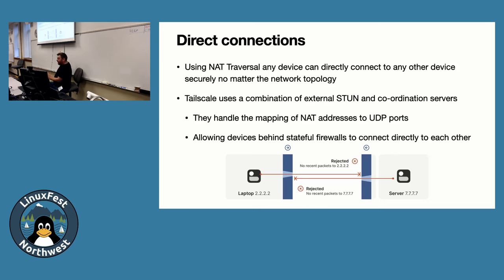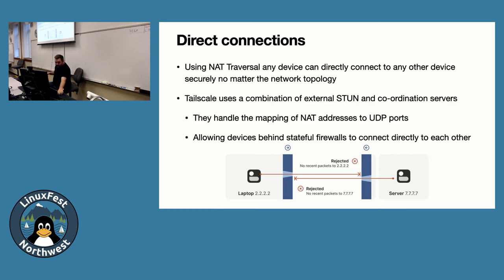Tailscale has to find a way for those two devices to introduce themselves to each other — that's all the STUN server is doing. It records and maps the NAT mapping between the two devices so the stateful firewalls on each end can say, 'you're who I was expecting, I'm going to allow that traffic back in.' It gets more complicated with IP masquerading and carrier-grade NAT, but that's a simplified version of how Tailscale works with NAT traversal.